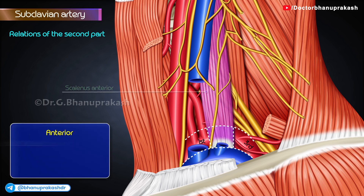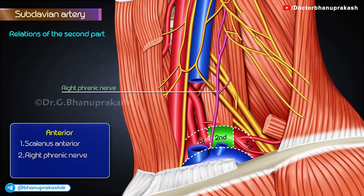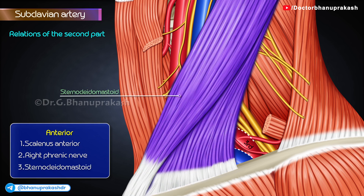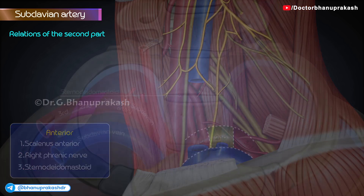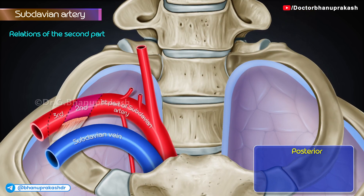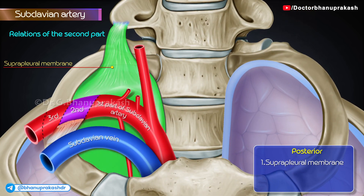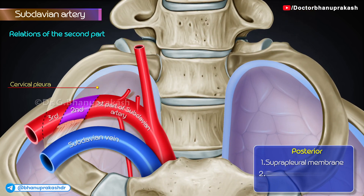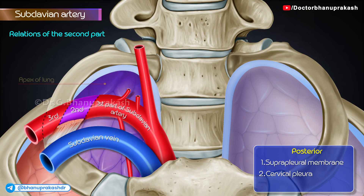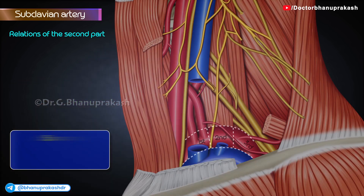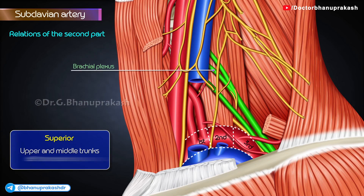Relations of the second part. Anteriorly: scalenus anterior, right phrenic nerve deep to the pre-vertebral fascia, and sternocleidomastoid. Posteriorly: suprapleural membrane, cervical pleura and the apex of the lung. Superiorly: upper and middle trunks of the brachial plexus.